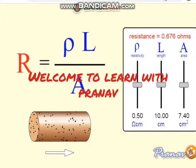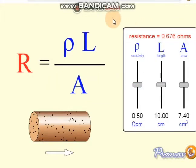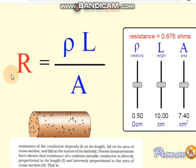Hello everyone, welcome to Learn with Pranap. In this video we will see the factors on which the resistance of a conductor depends. Resistance of a conductor depends on its length, on its area of cross-section, and on the nature of its material. If the length is increased, then the resistance will also increase.